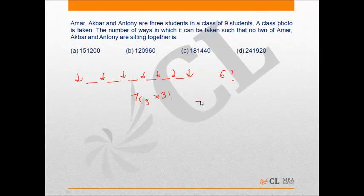So the total number of ways is 7C3 into 3 factorial into 6 factorial. So this is 7 factorial by 3 factorial into 4 factorial into 3 factorial into 6 factorial.